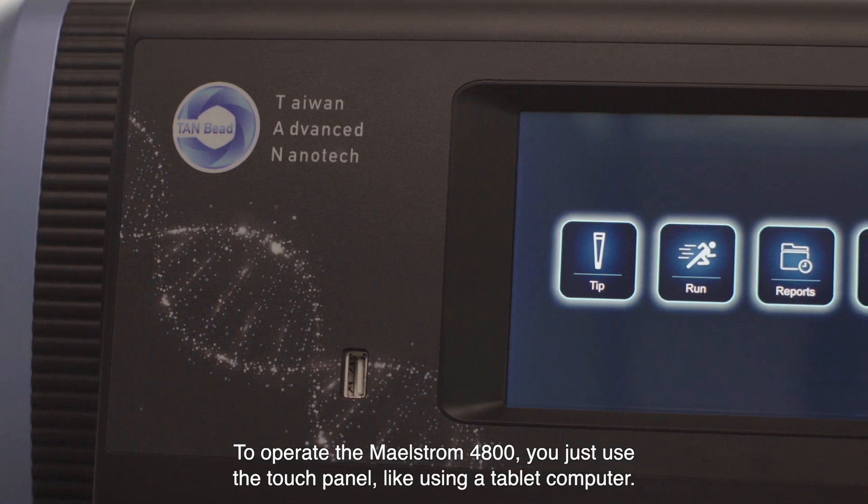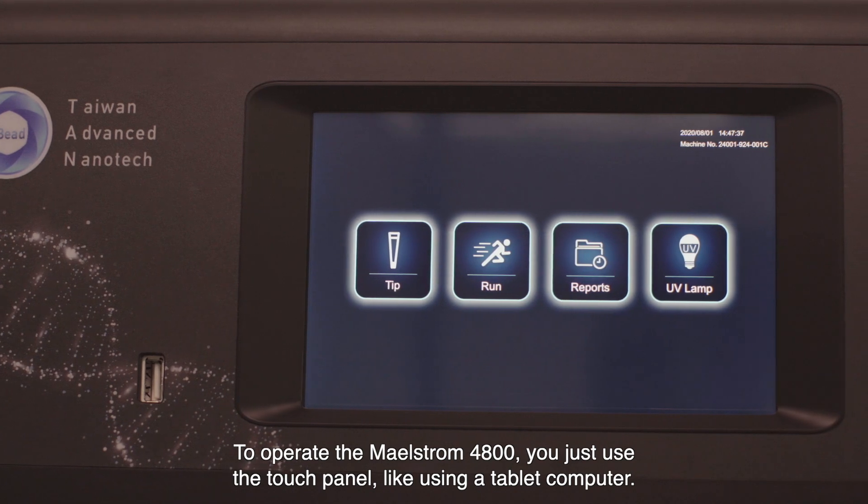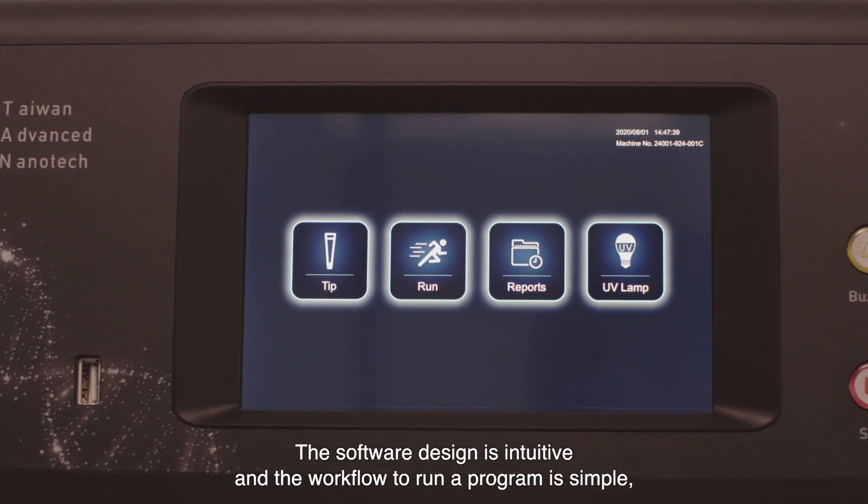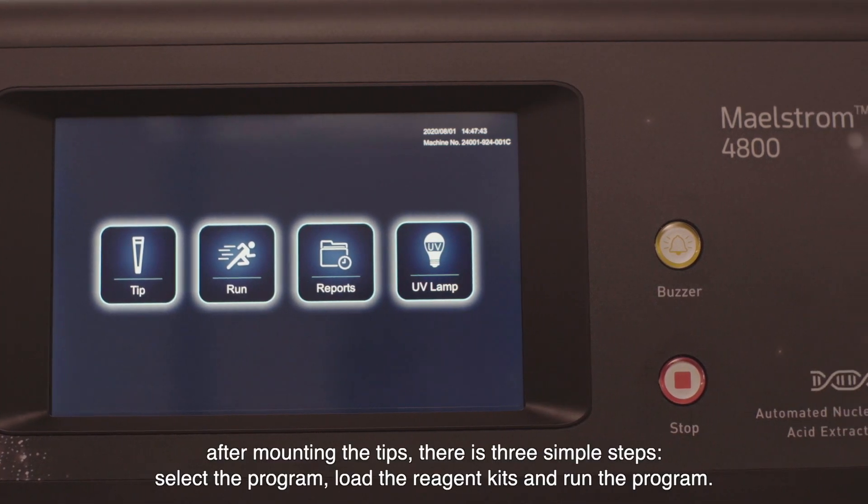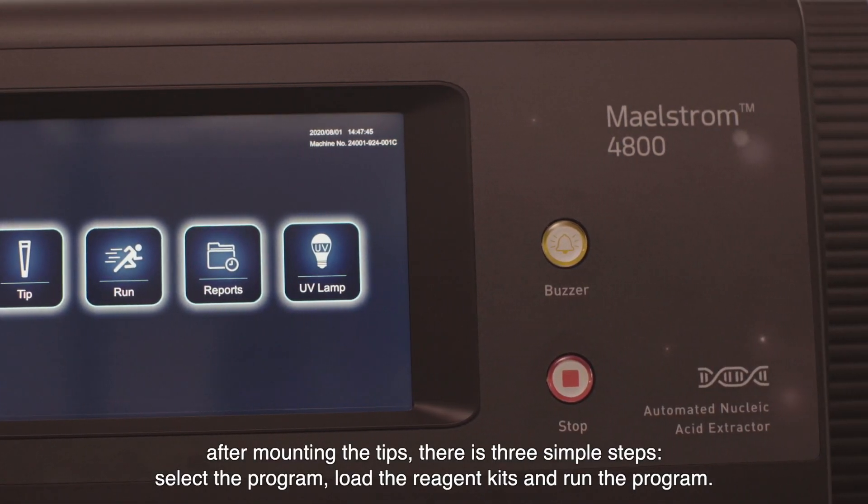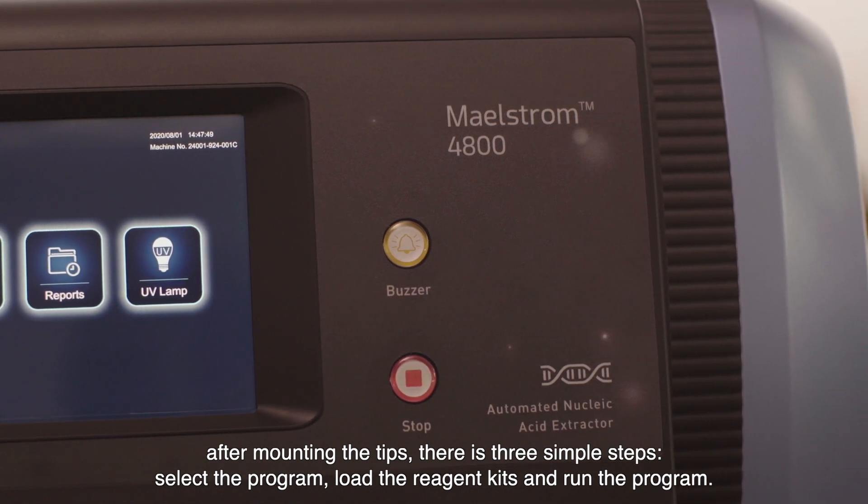To operate the Maelstrom 4800, you just use a touch panel like using a tablet computer. The software design is intuitive and the workflow to run a program is simple. After mounting the tips, there are three simple steps: select the program, load the reagent kits, and run the program.